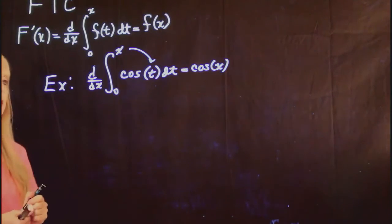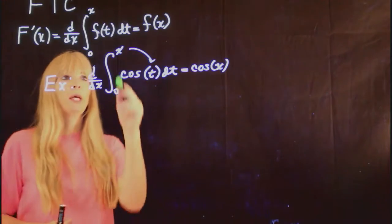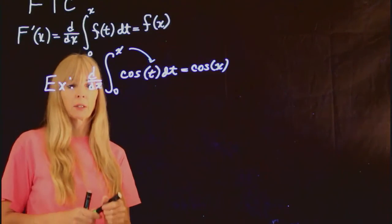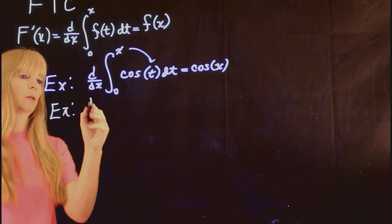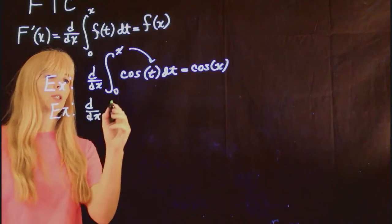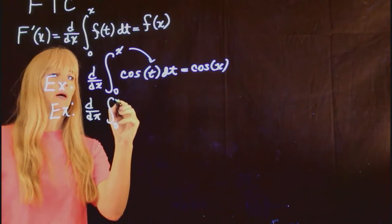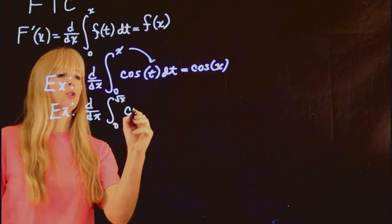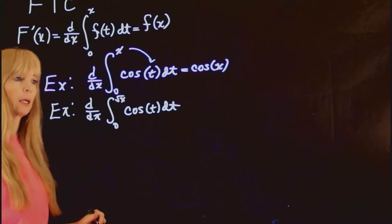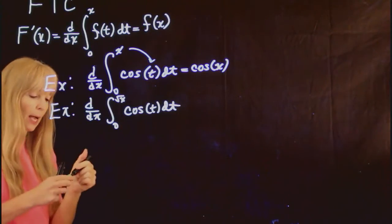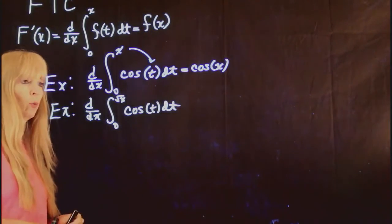The only time that this gets a little crazy is when this value is not x. So if we ended up with an example kind of just like this, but now my upper limit is square root of x. So notice this doesn't match that exactly. Well that's okay because I can do this one of two ways.